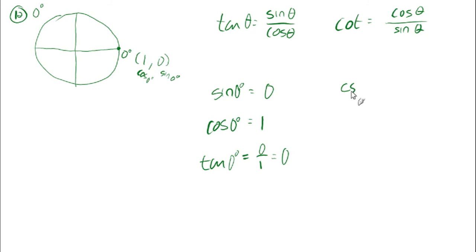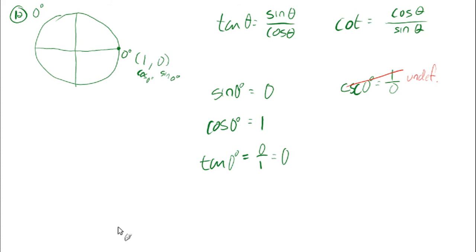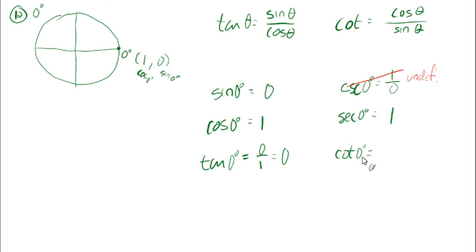Here's where it gets interesting. The cosecant of 0 degrees is the reciprocal of the sine, which would be 1 over 0 — but you can't divide by 0, so that's undefined. The secant of 0 degrees is the reciprocal of the cosine, 1 over 1, which is 1. The cotangent is the reciprocal of the tangent, which is 0, so 1 over 0 — also undefined.